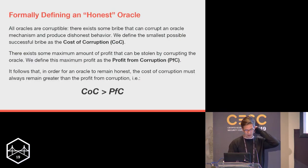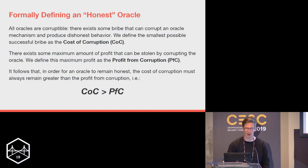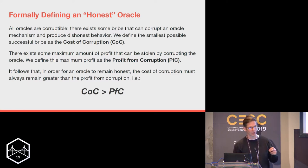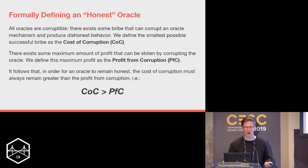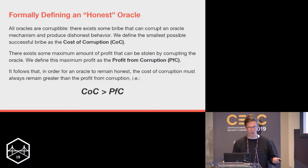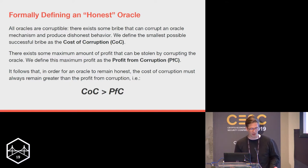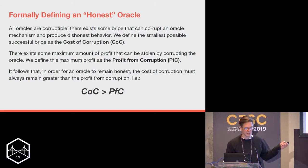Let's formally define the problem. Our starting premise is that all oracles are corruptible — there exists some minimum bribe we can pay to successfully corrupt an oracle system, which we define as our Cost of Corruption (CoC). Separately, there is some configuration where we can extract maximum profit from the system, which we call Profit from Corruption (PfC). For the oracle to be honest under an economically rational actor, we need CoC > PfC — that's the inequality we need to hold true.